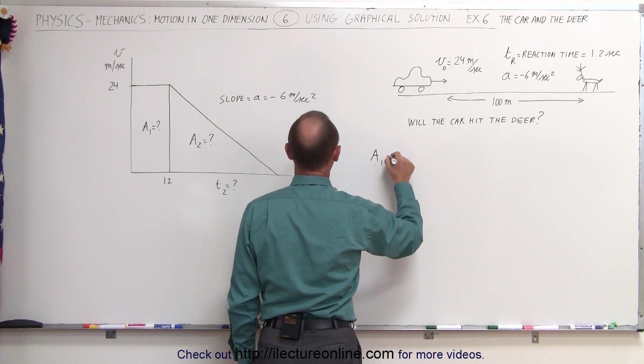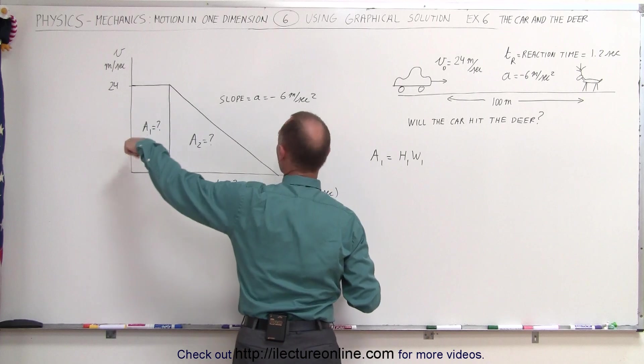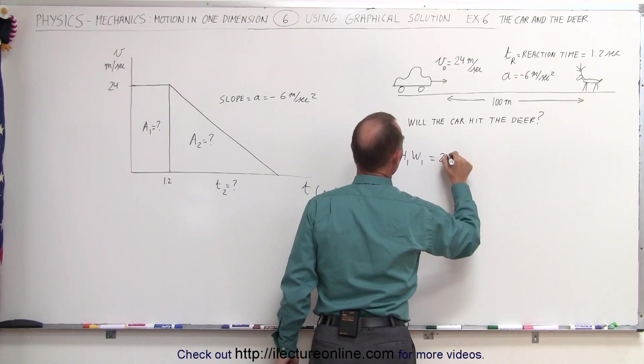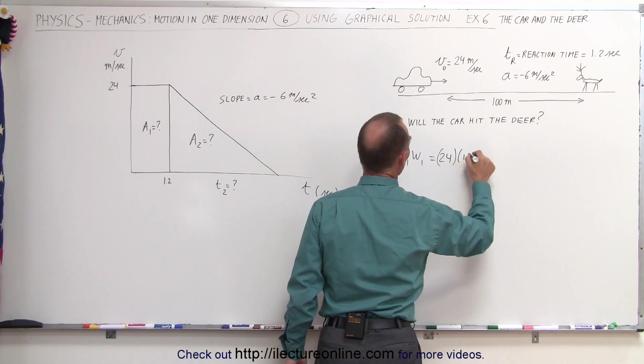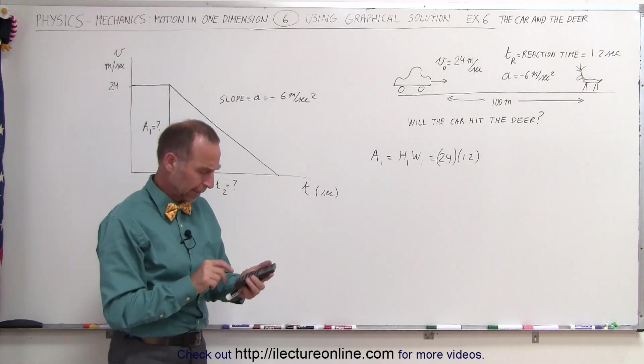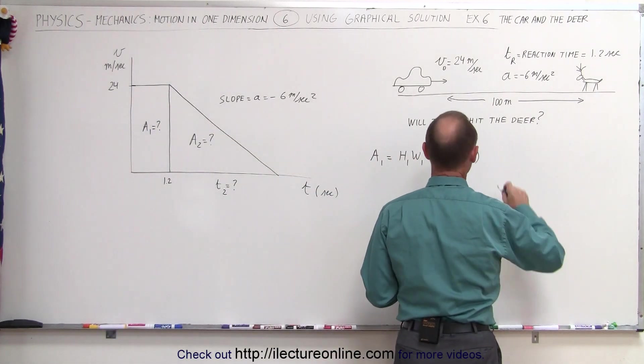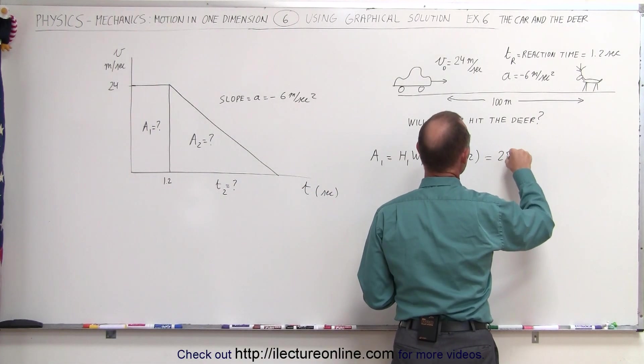a1 is a rectangle, so it's equal to the height times the width. The height is 24 and the width is 1.2, so 24 times 1.2 is 28.8 meters.